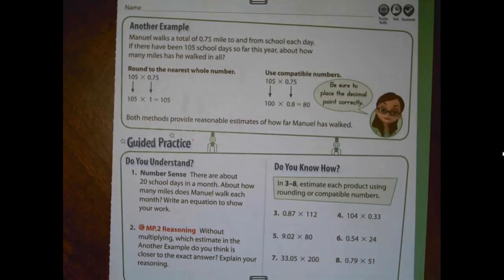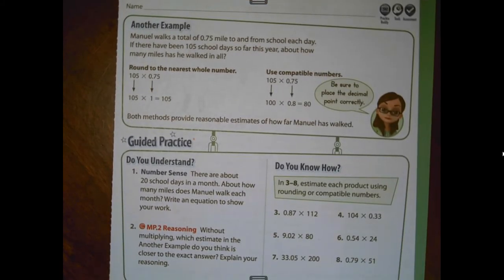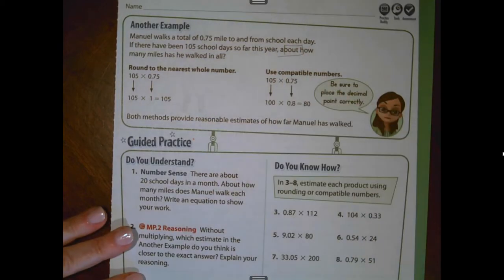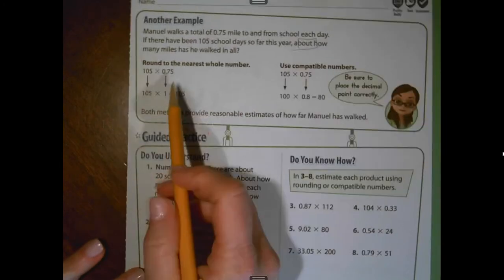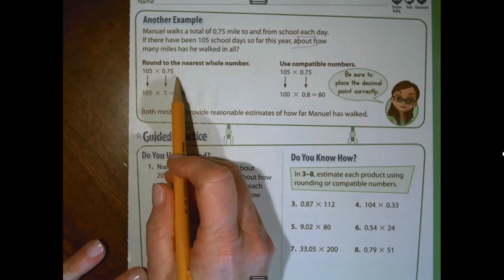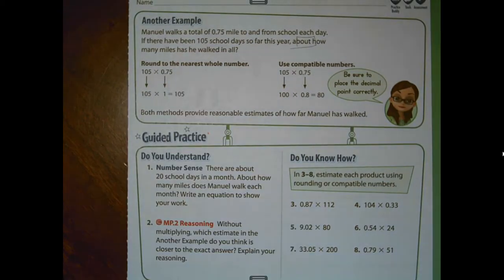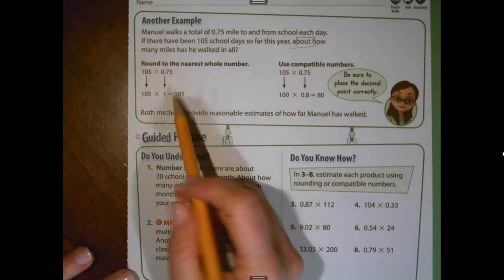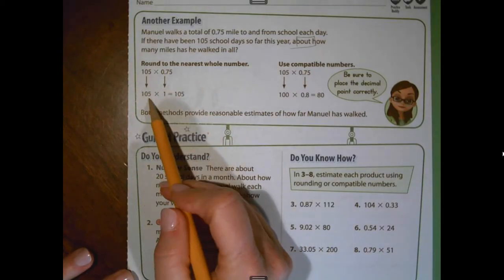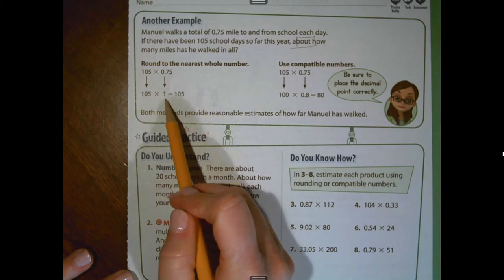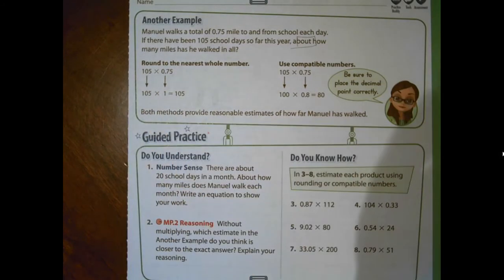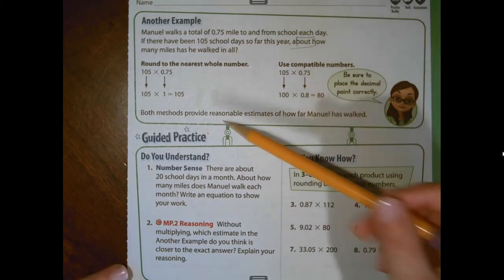Manuel walks a total of 75 hundredths of a mile to and from school each day. If there have been 105 school days so far this year, about how many miles has he walked in all? So here we go. We could take 105 and multiply it times 75 hundredths because we're making 105 groups of 75 hundredths. So that's multiplication.